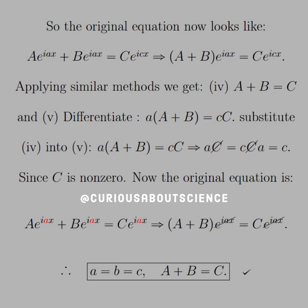Now the original equation is, well, Ae^(iax) + Be^(iax) = Ce^(iax). So (A + B)e^(iax) = Ce^(iax). Once again, proving that A plus B equals C. And little a equals little b equals little c, and big A plus big B equals big C.